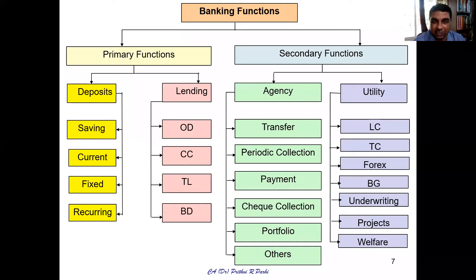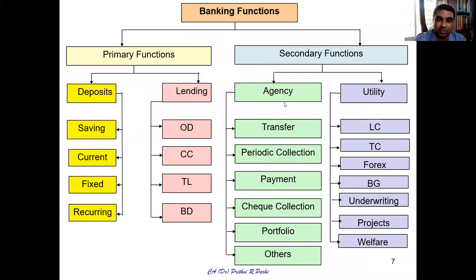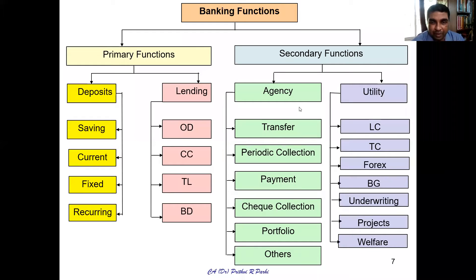Certain finances can be raised by using the bill discounting mechanism. Coming to secondary functions, we can broadly classify into two categories: agency functions and utility functions. Let us first see about agency functions.